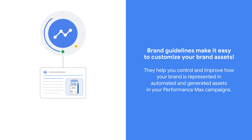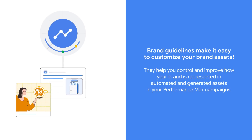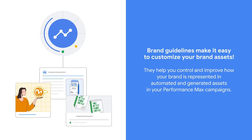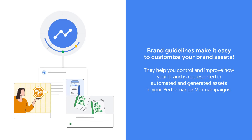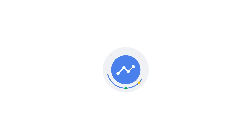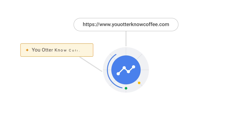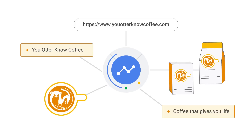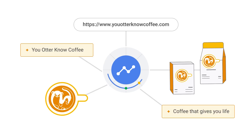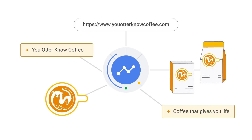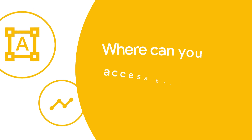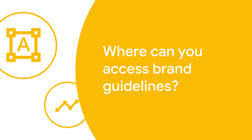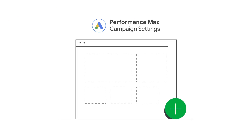Brand guidelines make it easy to customize your brand assets. They help you control and improve how your brand is represented in automated and generated assets in your Performance Max campaigns. When you create PMax campaigns, Google AI's brand inference technology extracts key brand elements from your final URL. You'll be able to view the generated brand controls and fine-tune your brand guidelines based on your preferences.